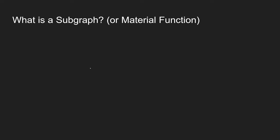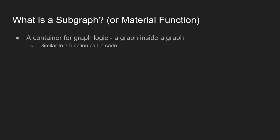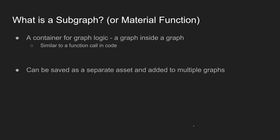In Unreal, these are called material functions, and in Unity, they're called subgraphs. But really, we're talking about the same thing. It's a container that contains graph logic — a graph within a graph. For those familiar with coding, a subgraph or material function is similar to a function call in code, where you take a block of code, make it into a function, and call it from various places, writing it just once. Subgraphs or material functions can also be saved as their own separate asset and added to multiple graphs.